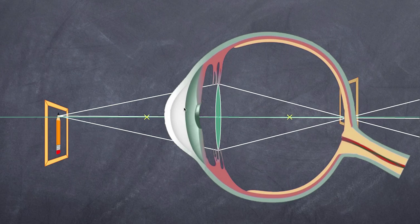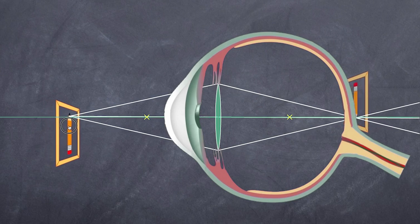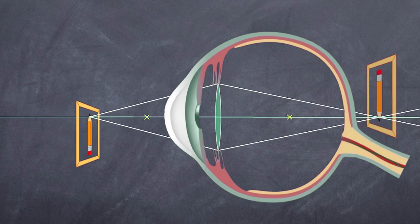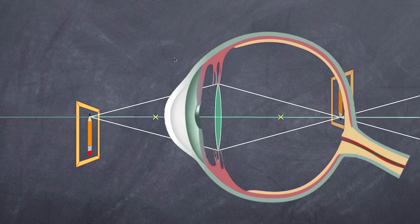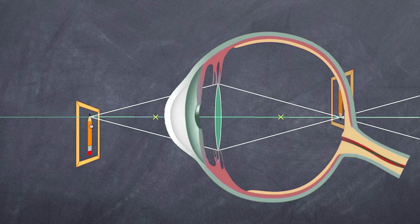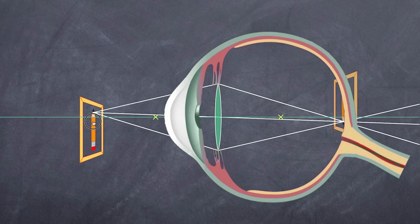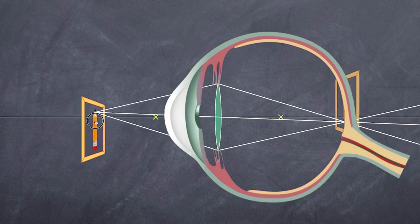If the object moves even closer, the curvature needs to be adjusted again — the ciliary muscles pull further, causing the lens to become fatter. In order to ensure the real image always sits at the same distance, the curvature of the lens is adjusted so the image remains in focus. This is in essence what causes you to focus: adjusting the lens curvature to ensure the real image falls onto the retina.